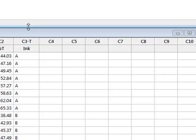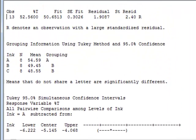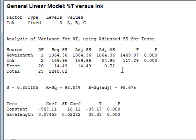The results appear in the session window, showing the standard ANOVA table, which measures the significance of the different factors. We can see that wavelength is very significant with a p-value of less than 0.0005, which is not surprising since wavelength was known to be a covariate. But we also see a very significant p-value for the ink factor, telling us that there is a significant difference between at least two of the inks.